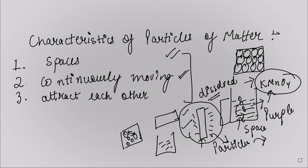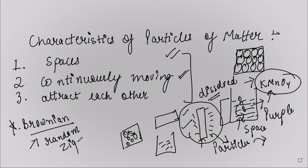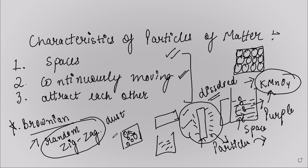Now let's understand one more concept — Brownian motion. Whenever any particular movement of particles is going on in a random direction, or any zigzag movement is going on, this indicates the movement of particles in a fluid as a result of continuous bombardment from molecules of the surrounding medium — this is known as Brownian motion. For example, dust moves randomly because the randomly moving particles collide with the dust particles, causing random or zigzag movement.